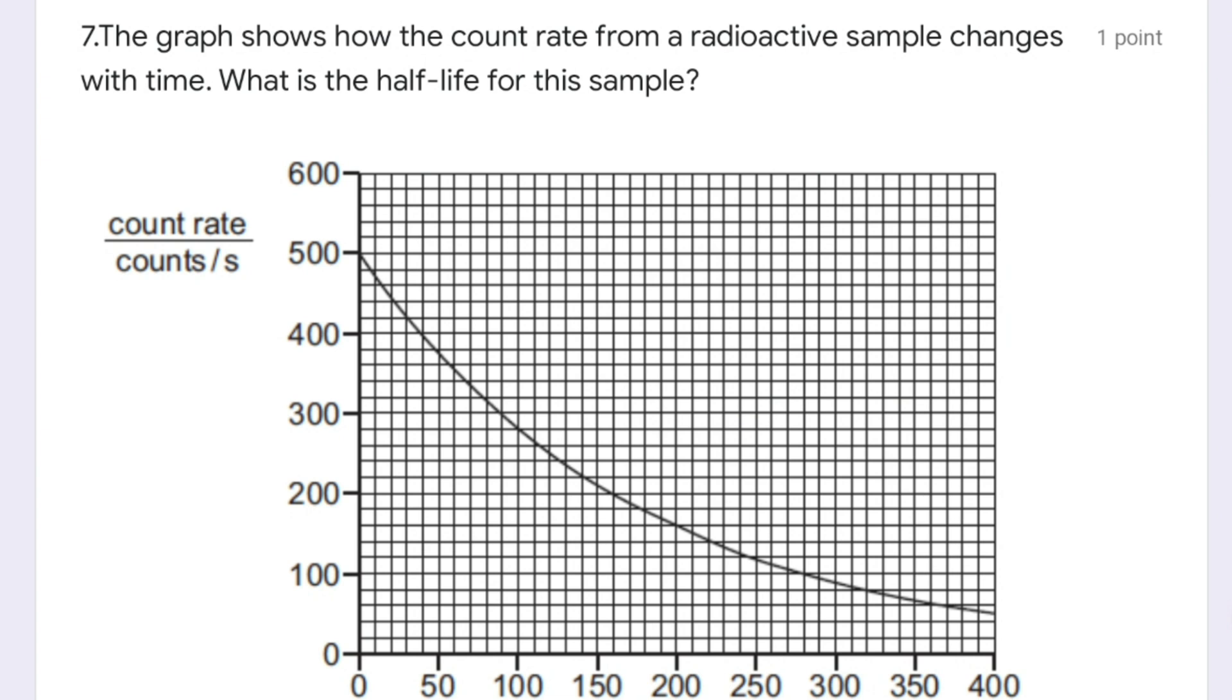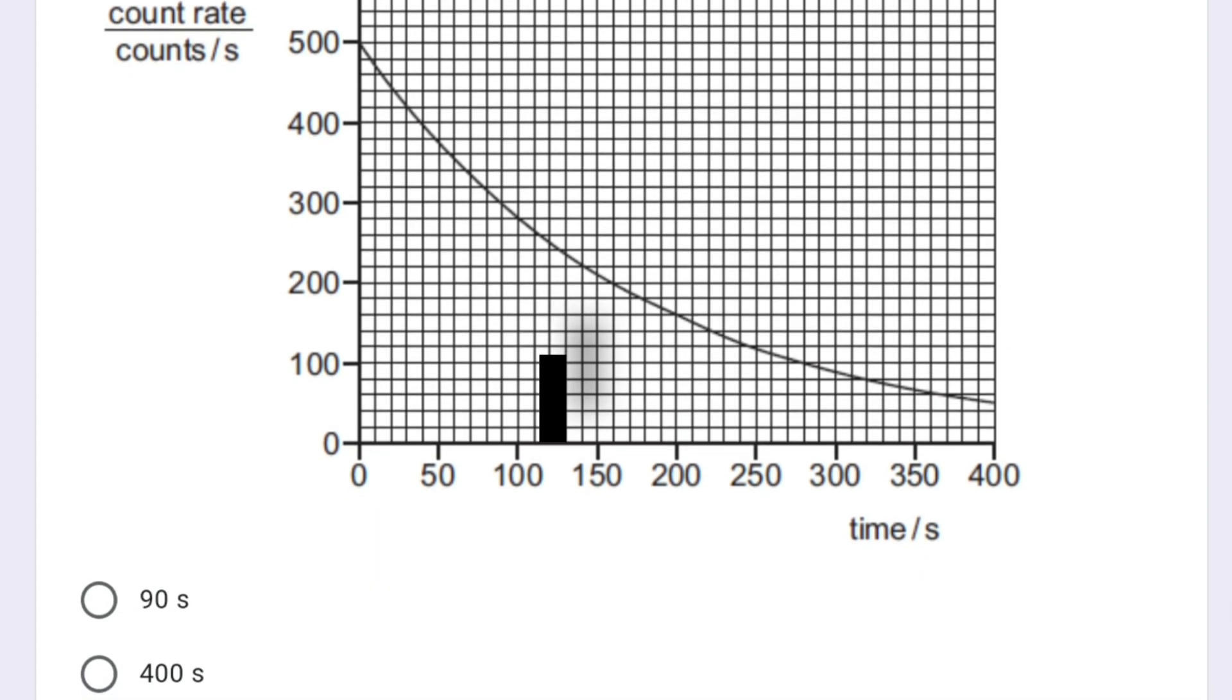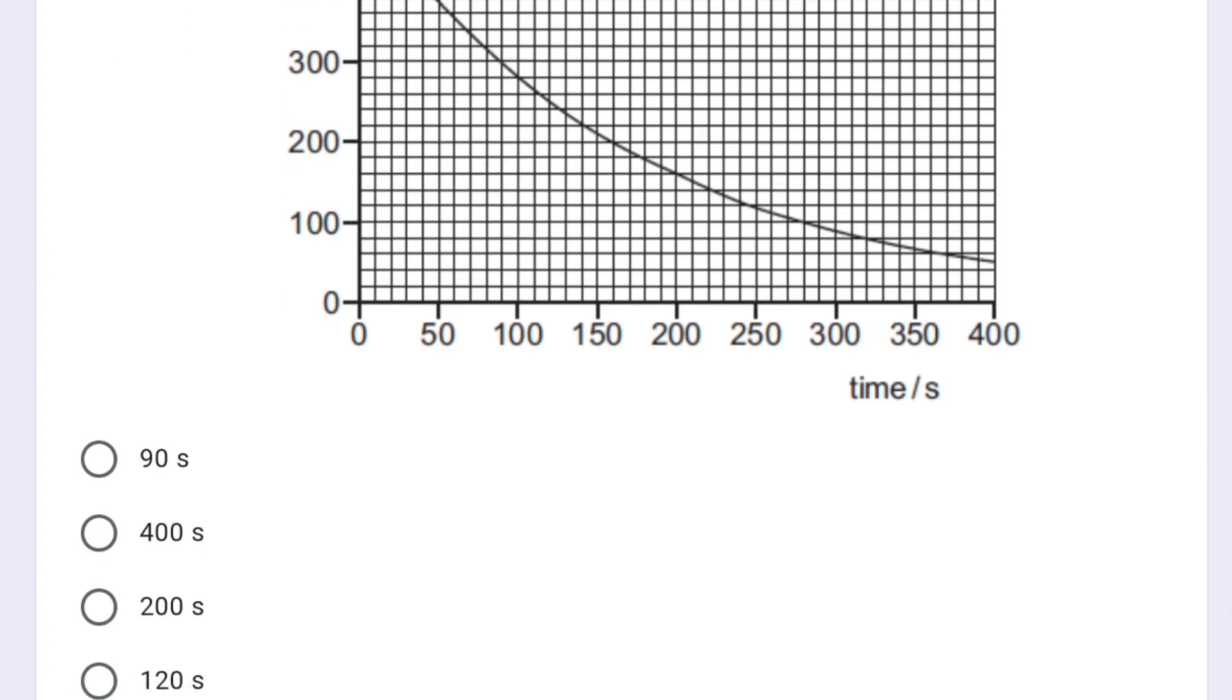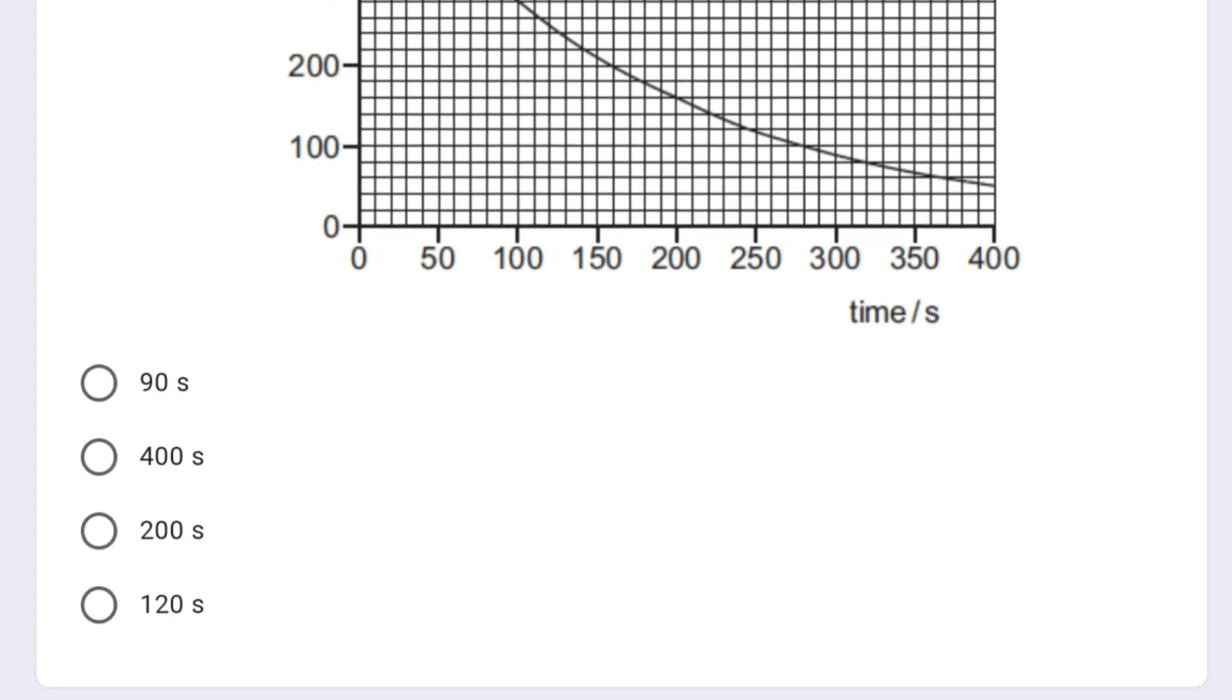This is another question related to half-life. The graph shows how the count rate from a radioactive sample changes with time. What is the half-life? If you look at the graph, in the beginning the count rate is 500. We have to look at how much time it takes for 500 to become 250. When you look at the graph carefully, it is between 100 and 150. So approximately 120 seconds, as per the options.